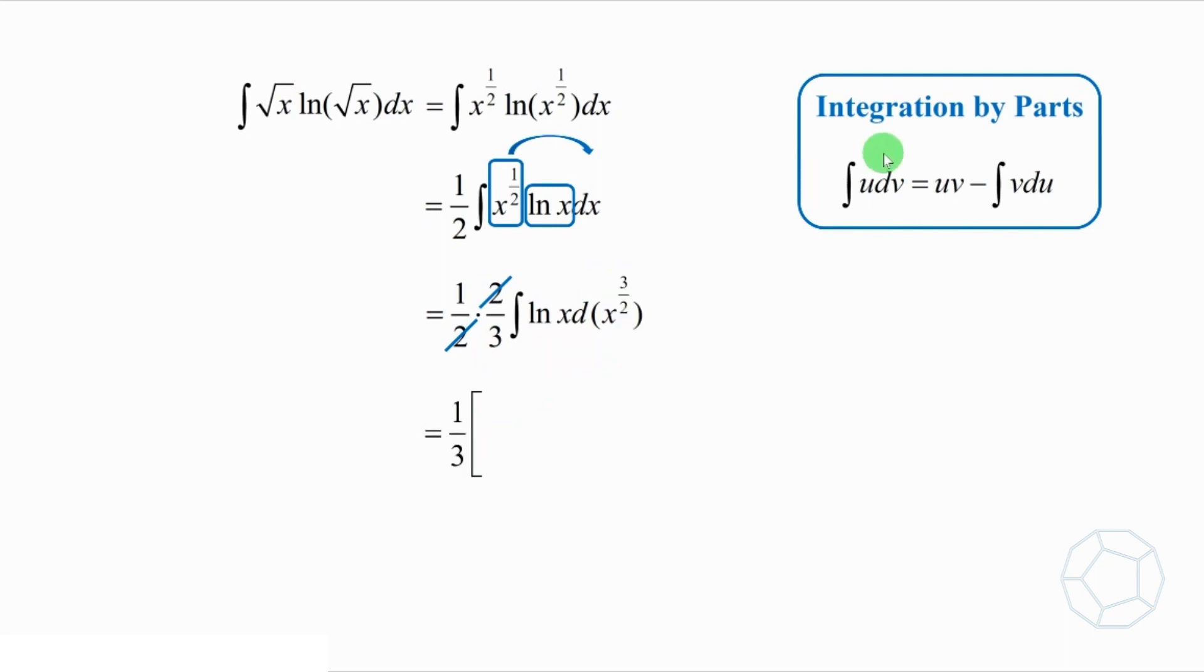Comparing the integral with the formula, u is equal to log x and v is equal to x to the power of 3 over 2. Because the index of u is 1, we only have to apply integration by parts once.